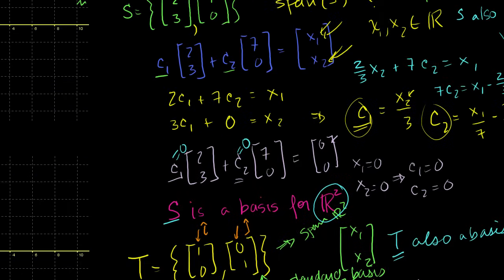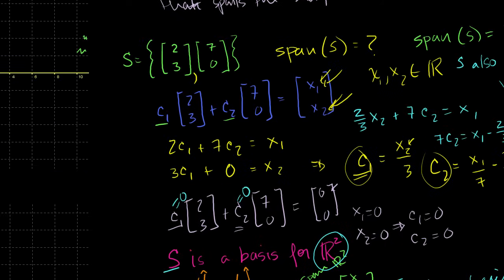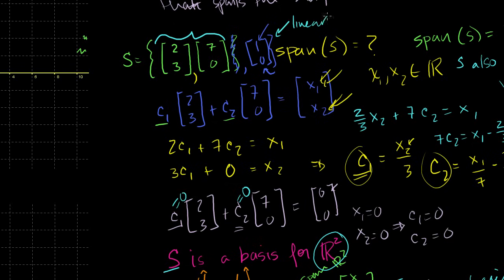Just to reinforce the point: if I added another vector (1,0) to S, would S still be a basis for R2? No — it would continue to span R2, but (1,0) is redundant because anything in R2 can already be represented by a linear combination of the original two vectors. So this new S would be linearly dependent, and therefore not a basis. In order to be a basis, you need the minimum, most efficient set of vectors that can span the subspace.